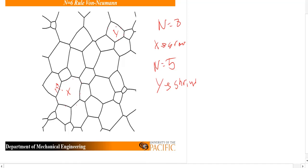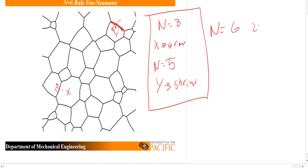You can also see it from curvature — looking at each interface, we can see positive curvature on one side, negative on the other, so atoms flow from high chemical potential to low, and the interface moves accordingly. This is the power of the n equals 6 rule — it only holds for 2D grains. We can tell which grains are going to shrink, grow, or not change at all, solely based on the number of sides. We need to thank von Neumann for this principle, and we're going to wrap this up with Ostwald ripening in the next video.